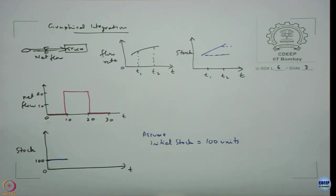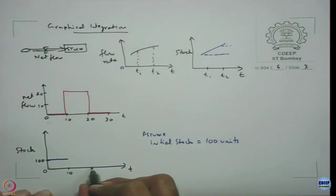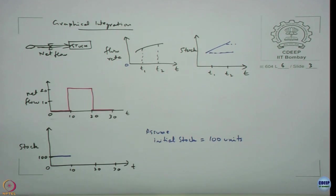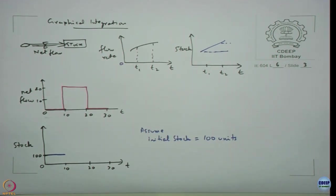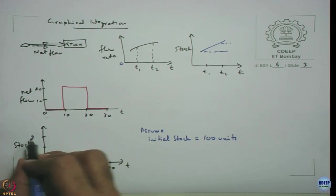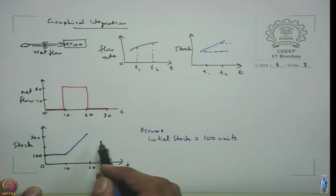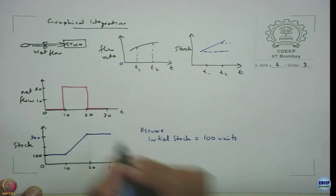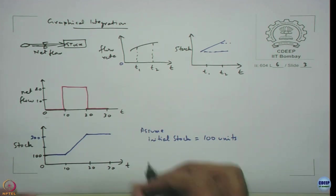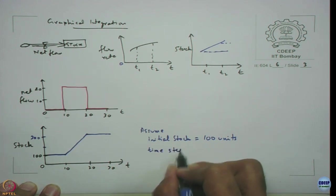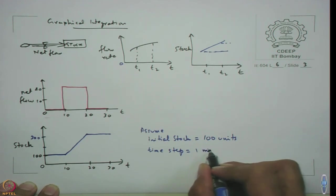So until time 10 it is 100. Then what happens from time 10 to 20? It will increase — it is a ramp function, it is going to increase linearly. What will be the maximum value of the stock? It is going to go up to 300. After that, at time 20 onwards, the flow falls back to 0, but the stock remains unchanged at 300 — it does not fall to 0.